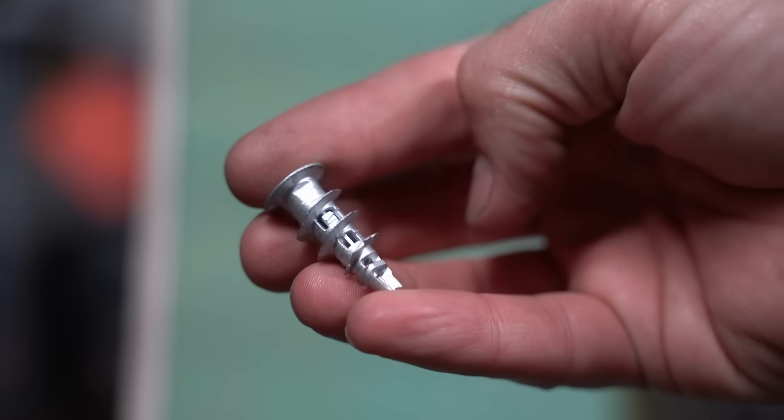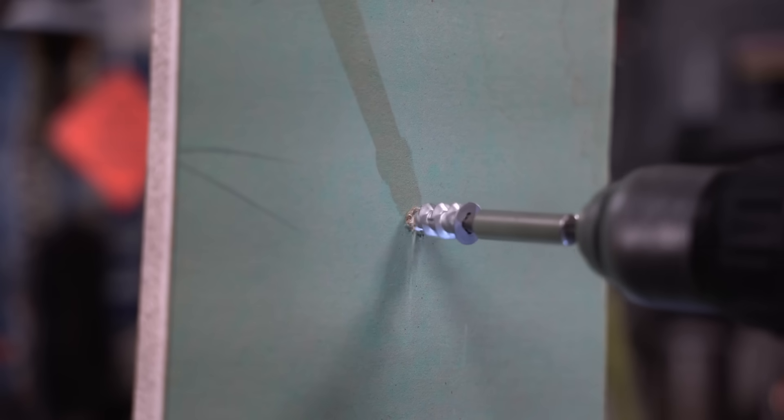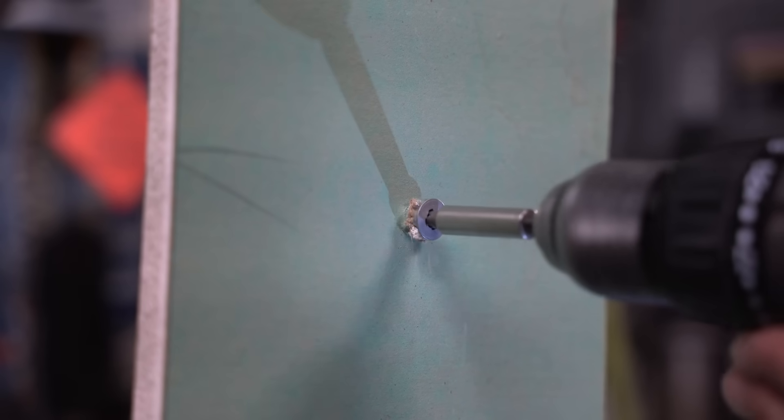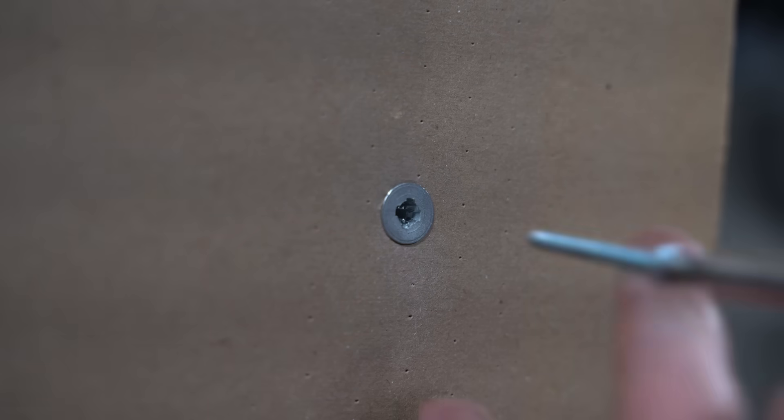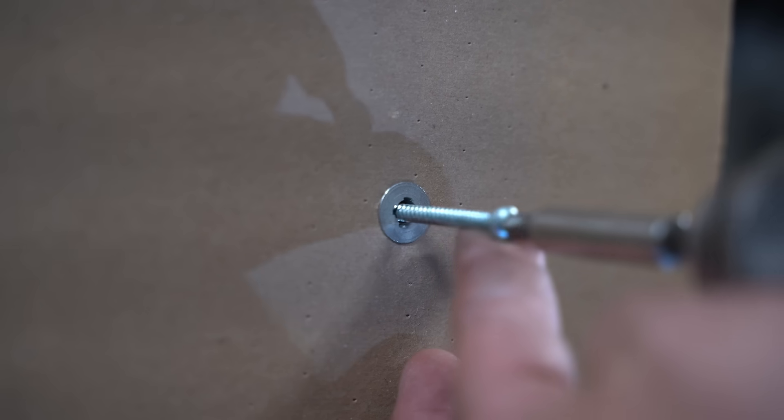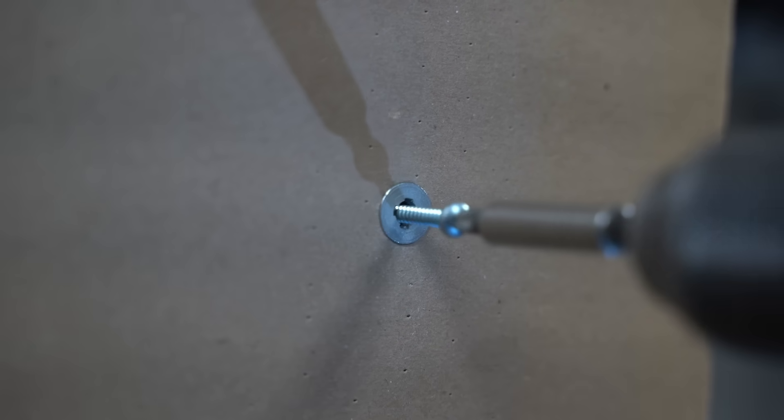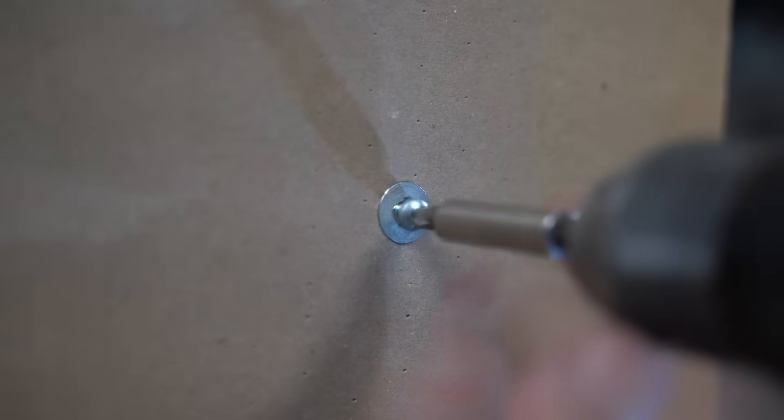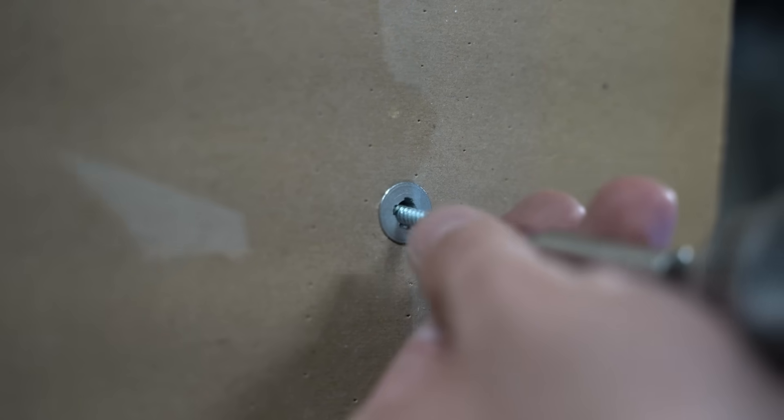This is a drywall anchor. This isn't actually installing threads into drywall, per se, but it's easily threaded with whatever screw or bolt you put in it. So, in the end, you kind of have a threaded hole that you can use to attach and detach stuff.